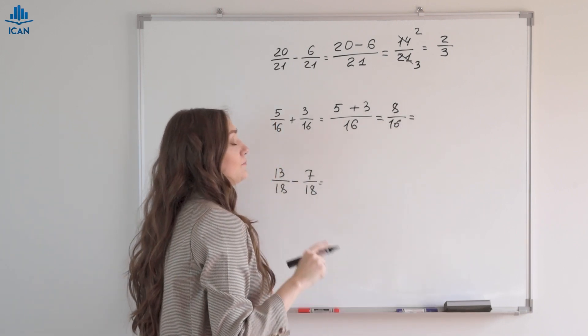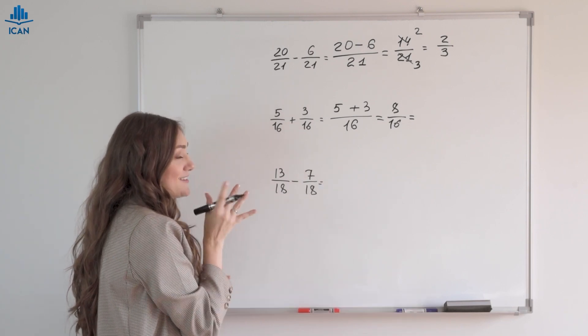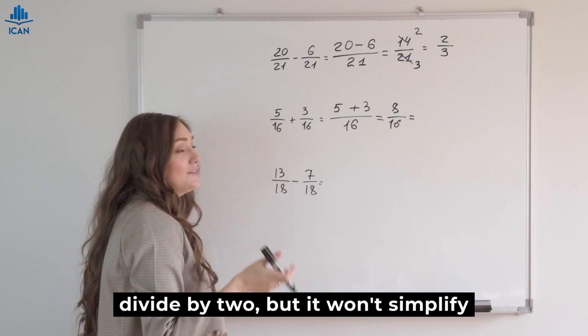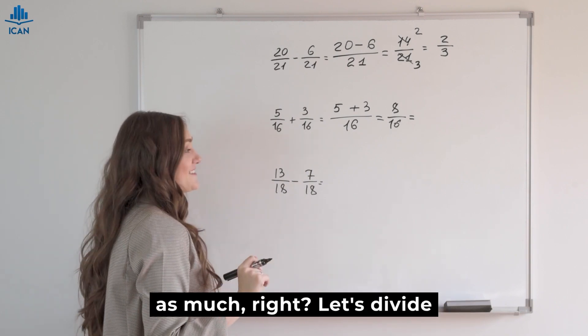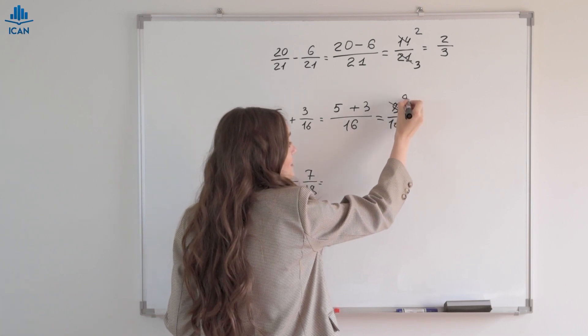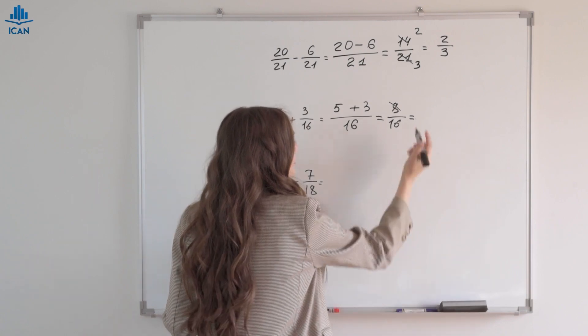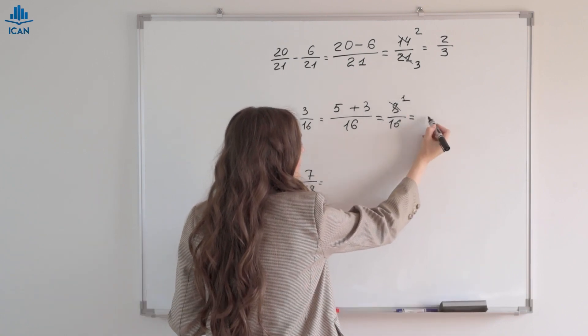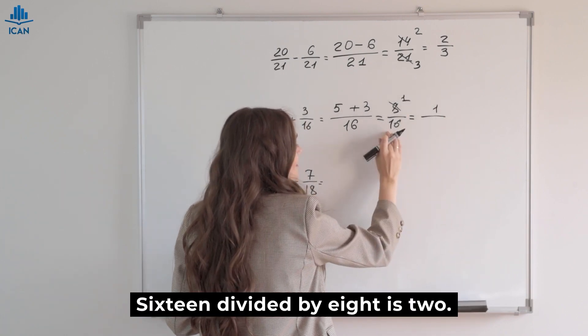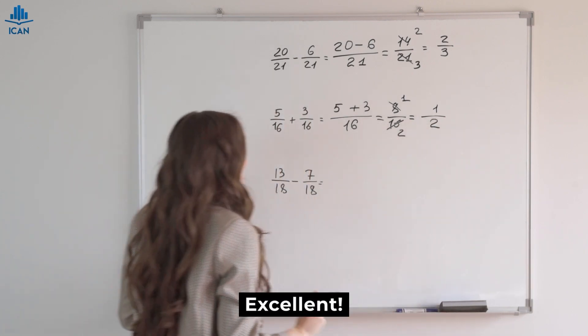Eight divided by sixteen. Eight-sixteenths. What can sixteen be divided by to simplify it? By two. You can divide by two but it won't simplify as much, right? Let's divide by eight. Eight divided by eight is one. Sixteen divided by eight is two. Excellent.